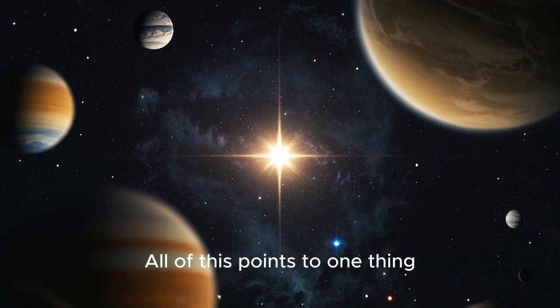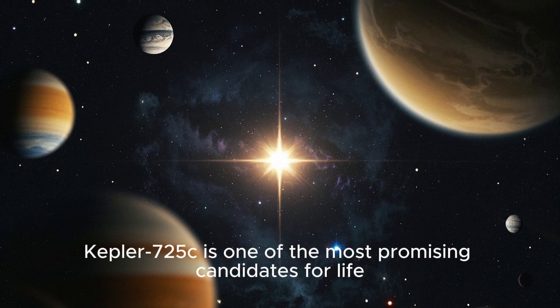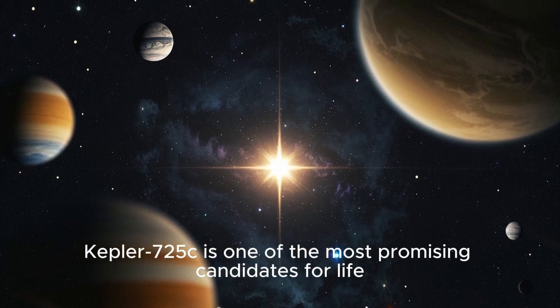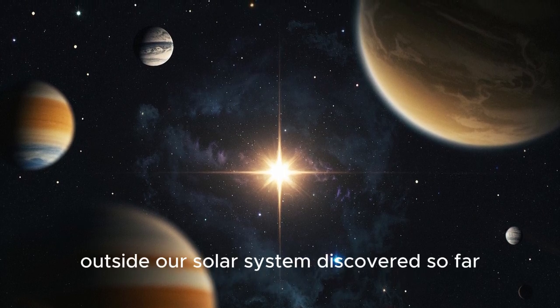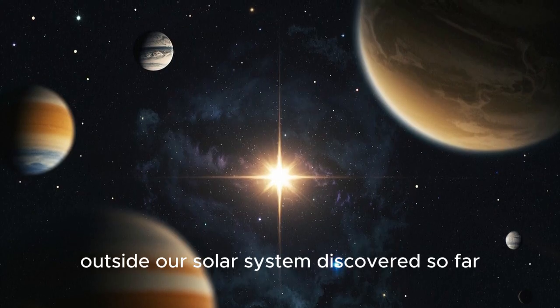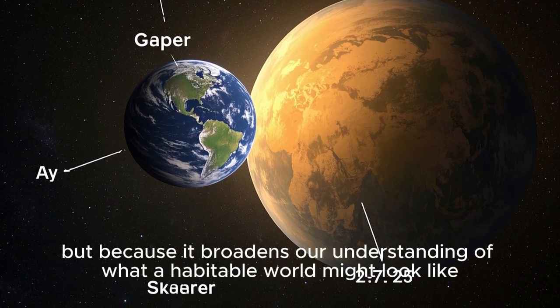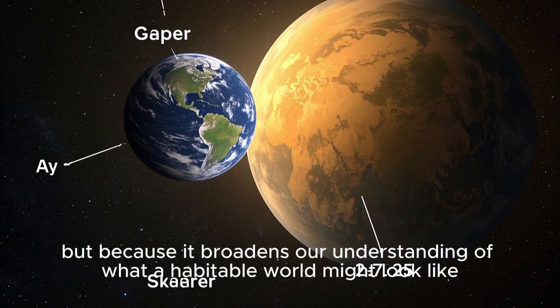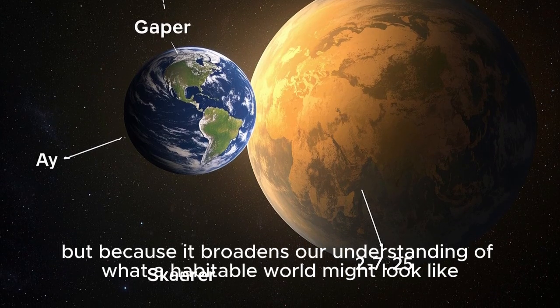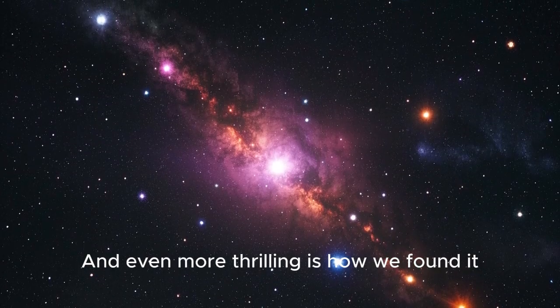All of this points to one thing: Kepler-725c is one of the most promising candidates for life outside our solar system discovered so far, not because it resembles Earth exactly, but because it broadens our understanding of what a habitable world might look like. And even more thrilling is how we found it.